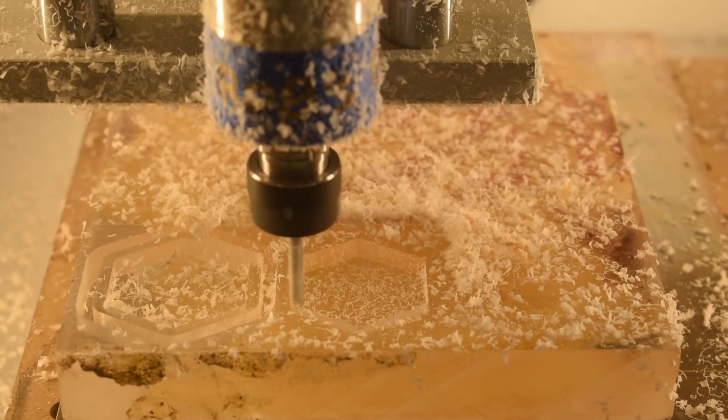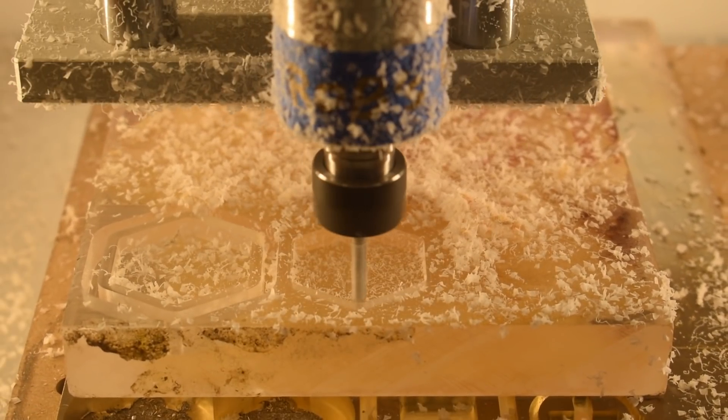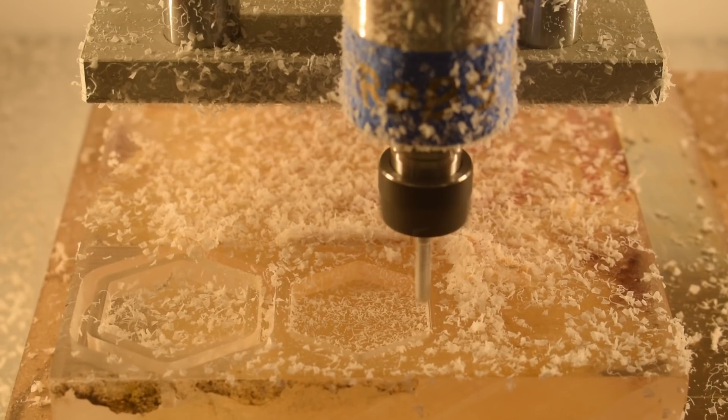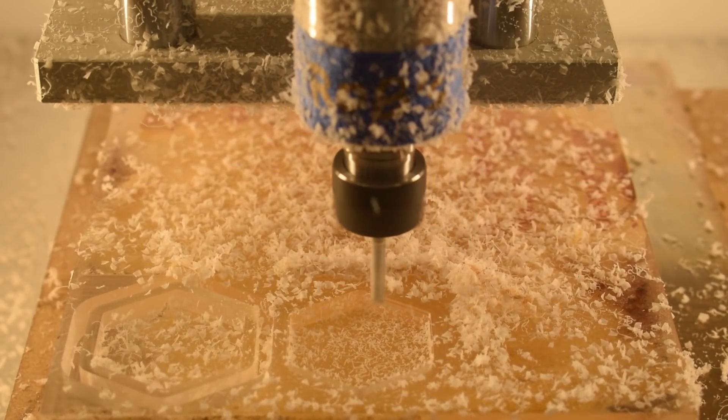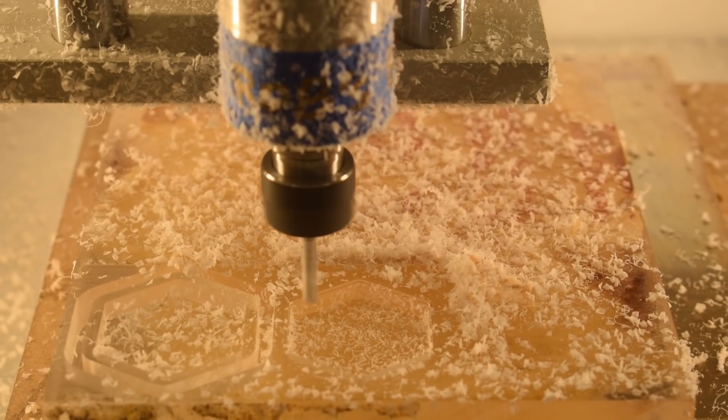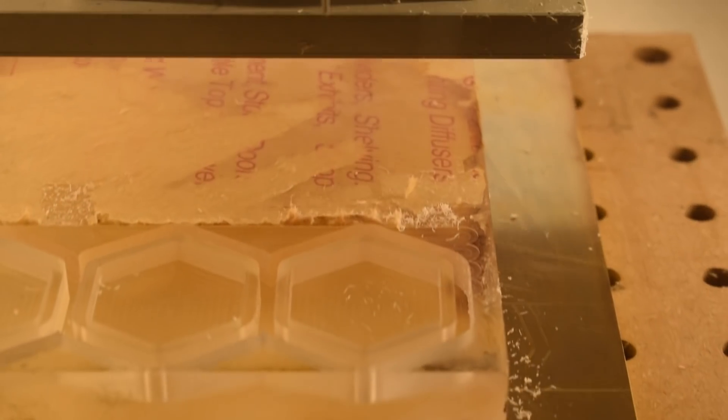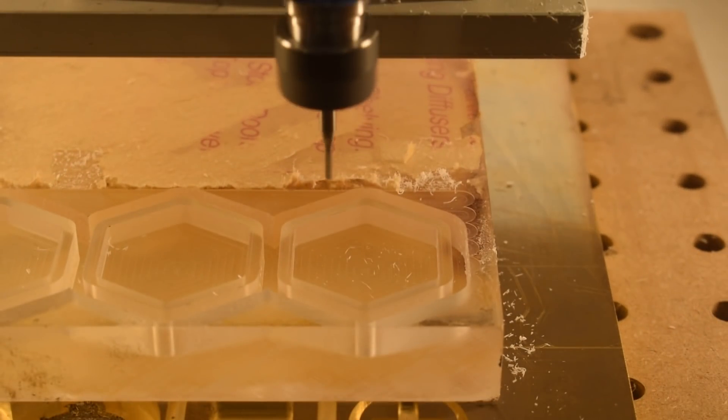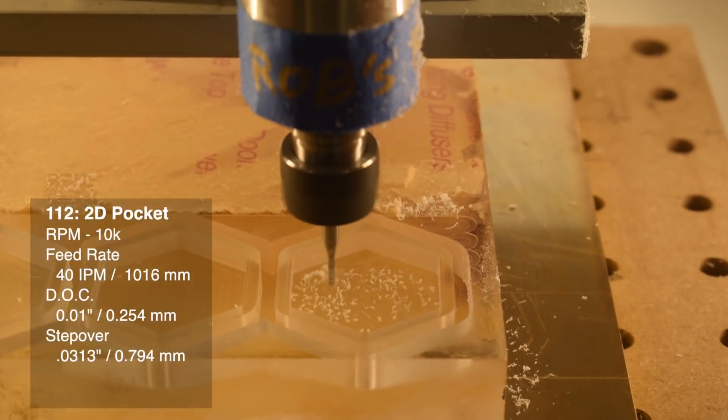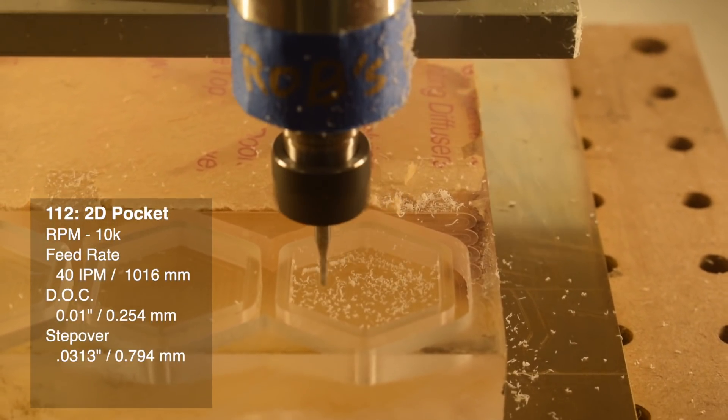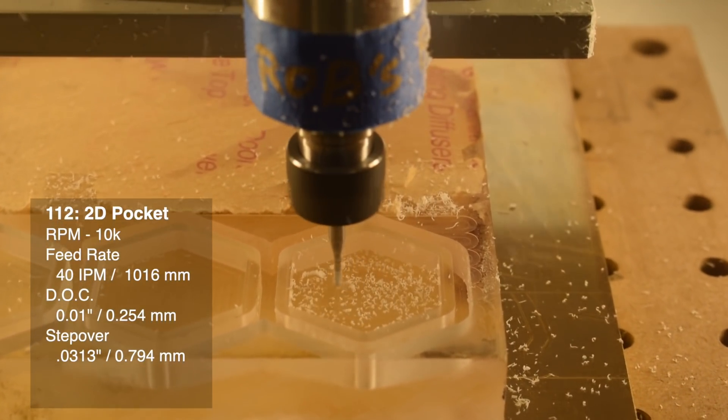And for cleaning up these test pieces, I'm running a finishing pass at a chip load of 1.5 thou per tooth. That leaves you with a smooth, slightly frosted surface which can be polished out easily by hand or by flame. And in case you want to cut small details, for pocketing with our 112 cutter, you can use 10,000 RPM, 40 inches per minute, a 0.01 inch depth of cut, and 50% step over.